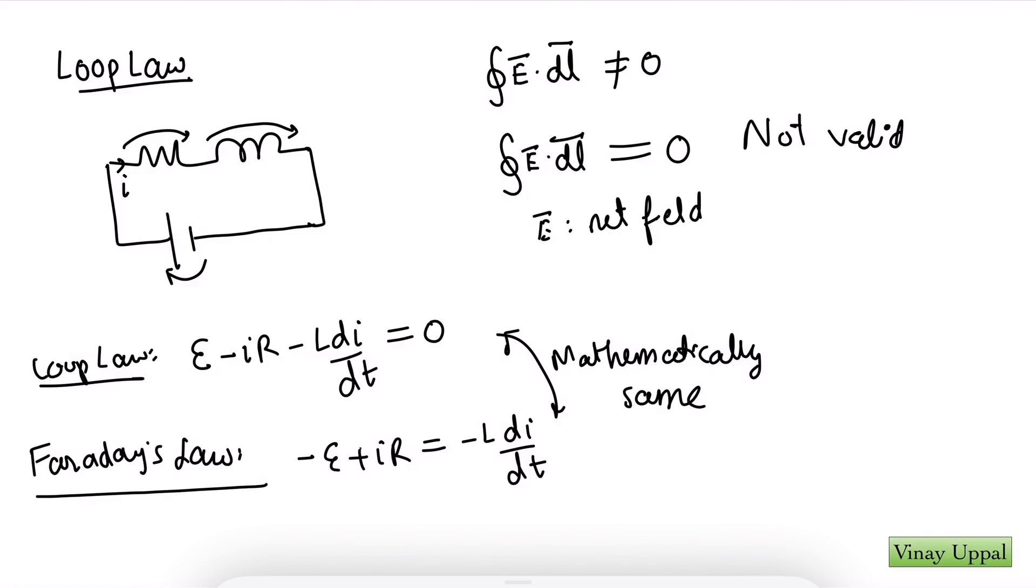But then why does loop law work? Is it just a mathematical coincidence? In my experience of teaching and studying physics for many years, there are very, very few coincidences that occur in physics. If you see an equation that is seemingly only mathematically coincidental, there is every chance that there is some deeper physics to it than what you realize. So I'm about to tell you why loop law is actually correct even when we look at it from a physics point of view.